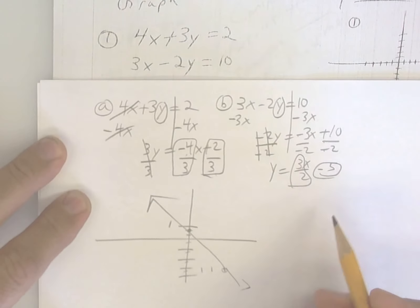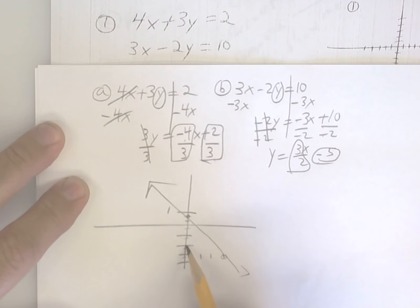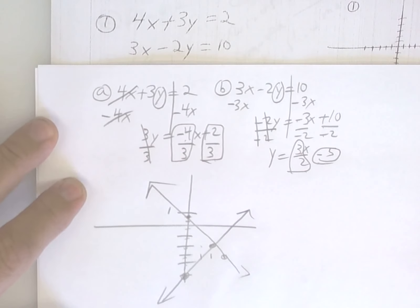The next one is going to be down 5. And then the slope is up 3 over 2. And where they cross is your answer. And that's how you graph.